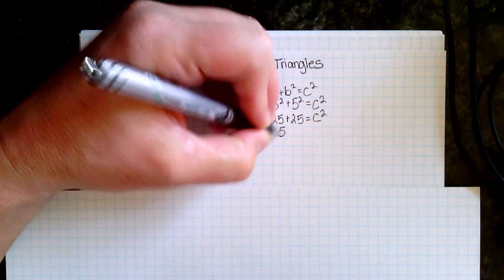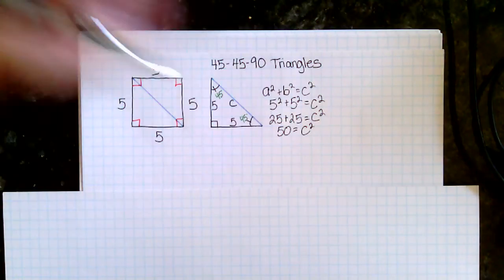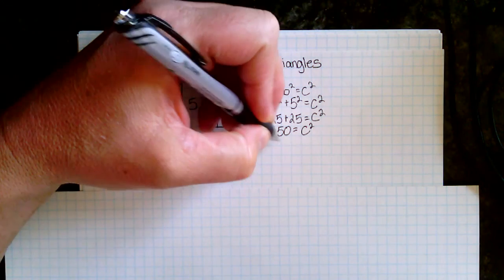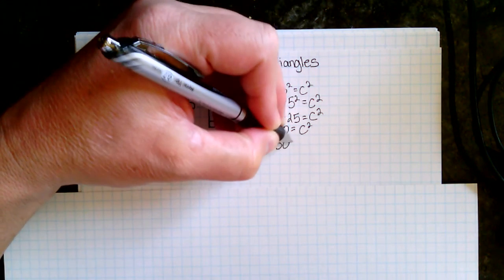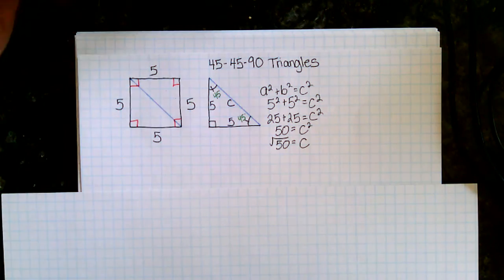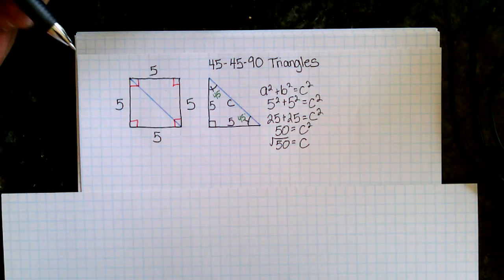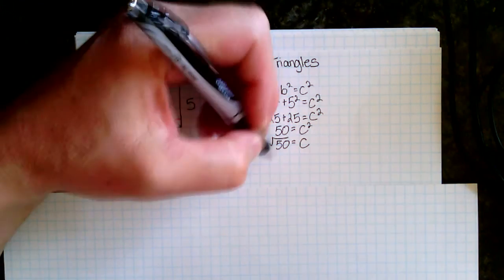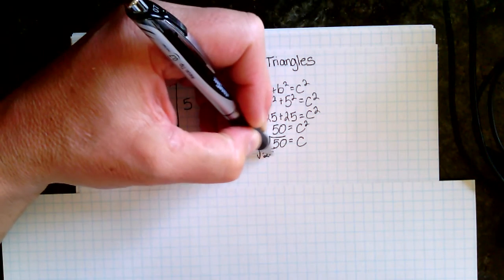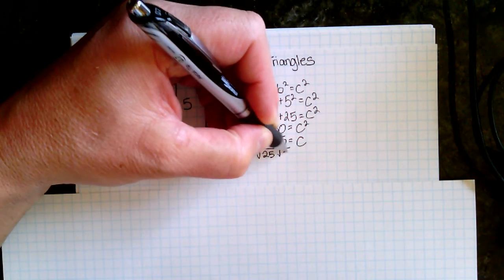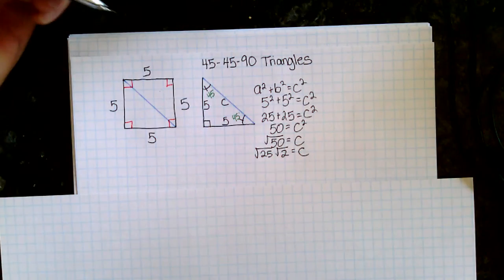So then, combine my terms, 50 equals C squared. If I take the root of both sides, I'm going to get root 50 equals C. Remember, I took the root of both. And then when I simplify that, I can factor the root 50 into 25 times 2. And again, that's still equal to C.